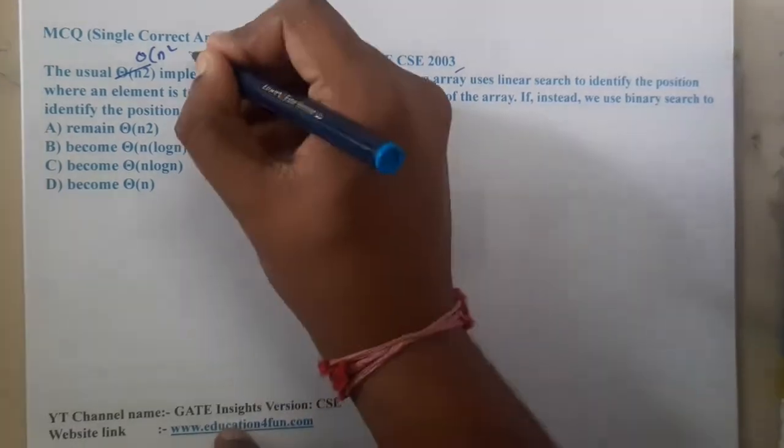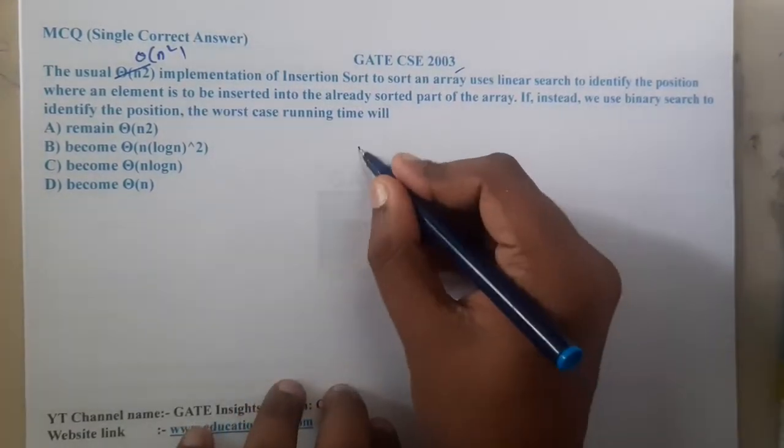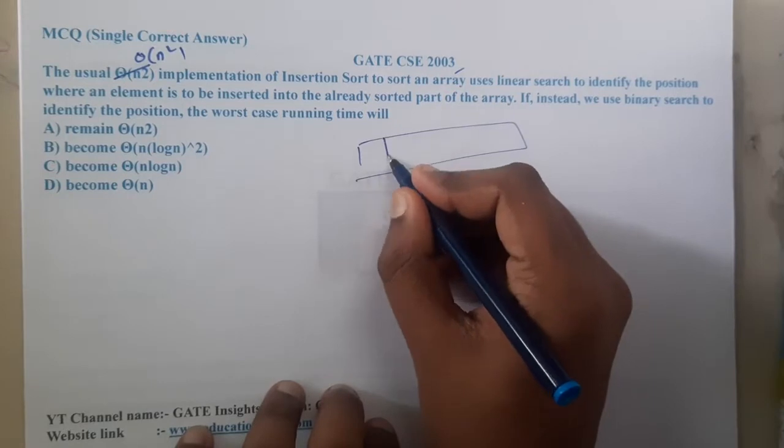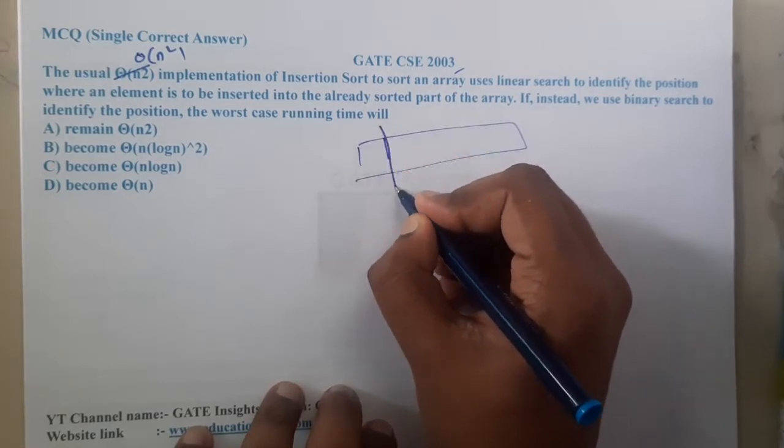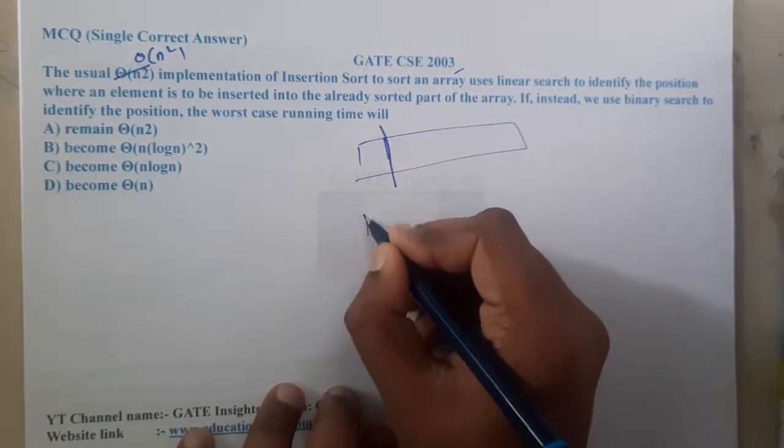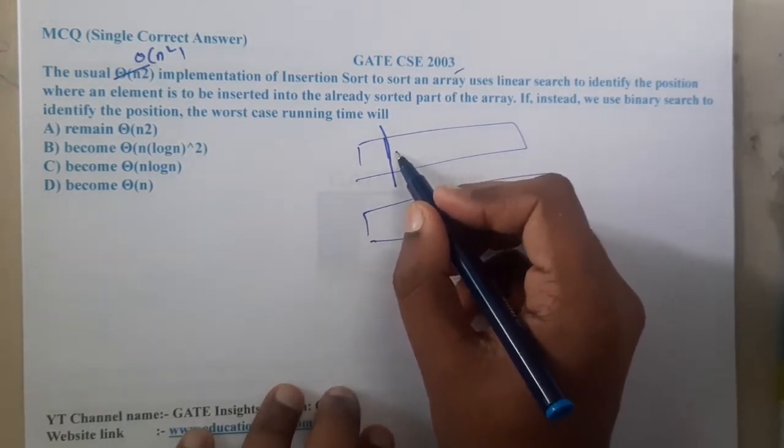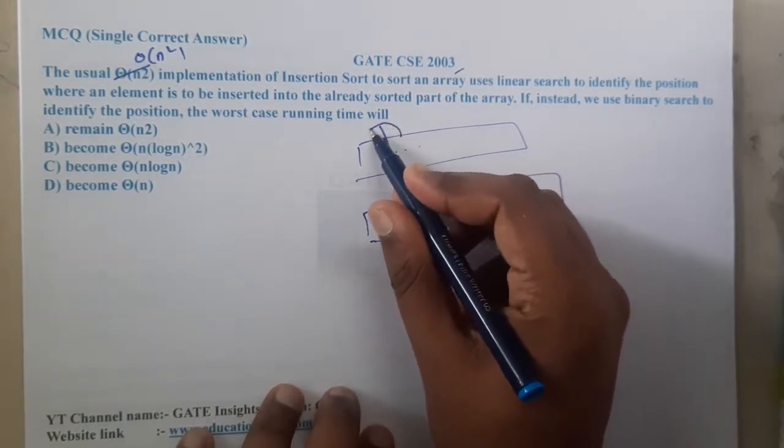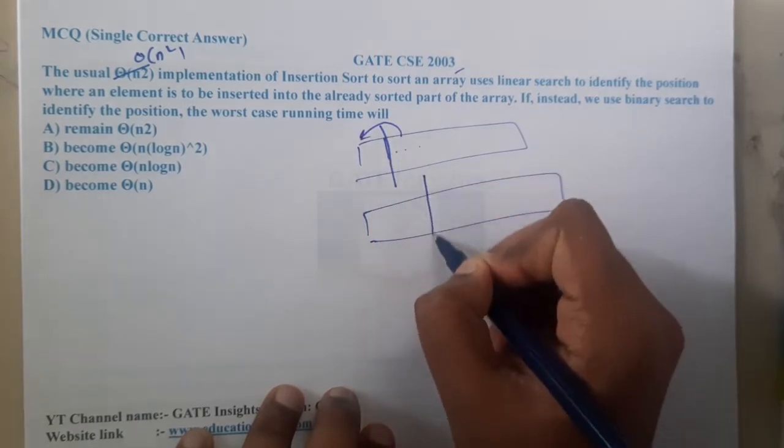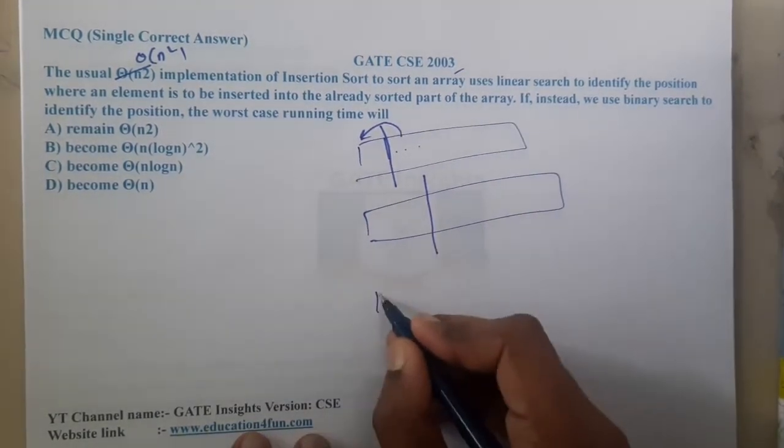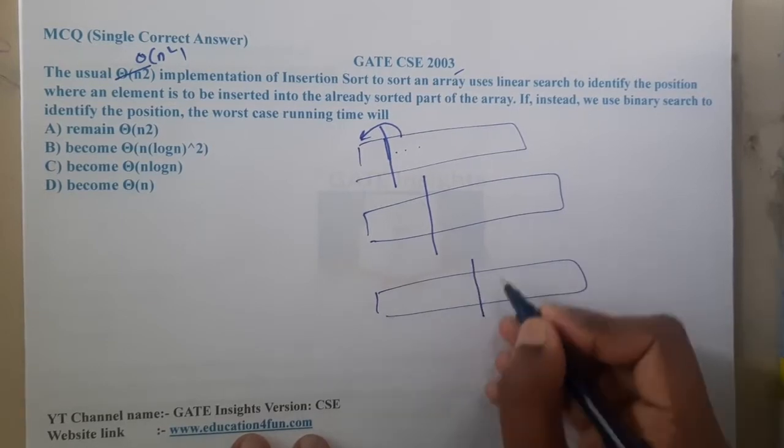So here, if you recall how exactly insertion sort will work, let us try to recall. In the first case, you will assume that the first element is sorted. In the second case, you will take the second element and you will place it in its own position. Now after that, these two elements will be sorted. So in this way you are going to sort them.